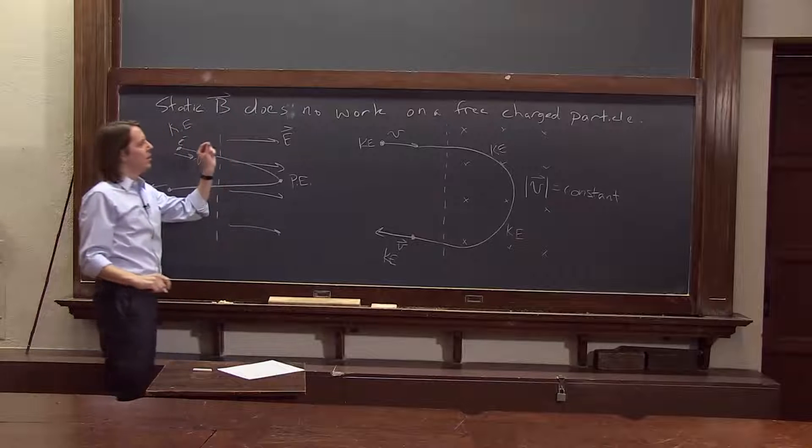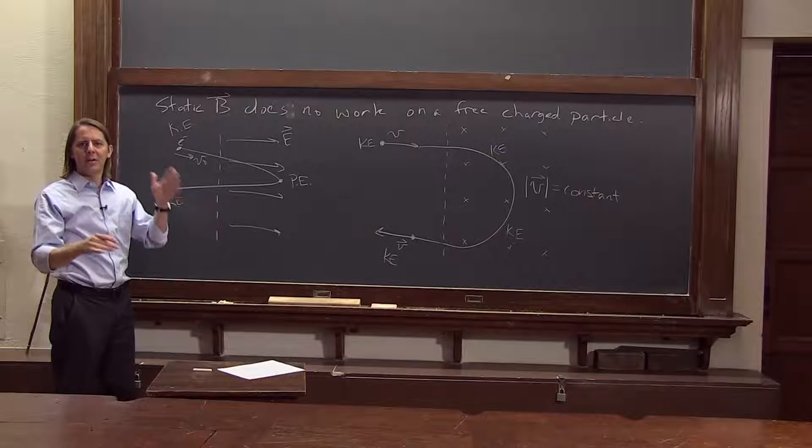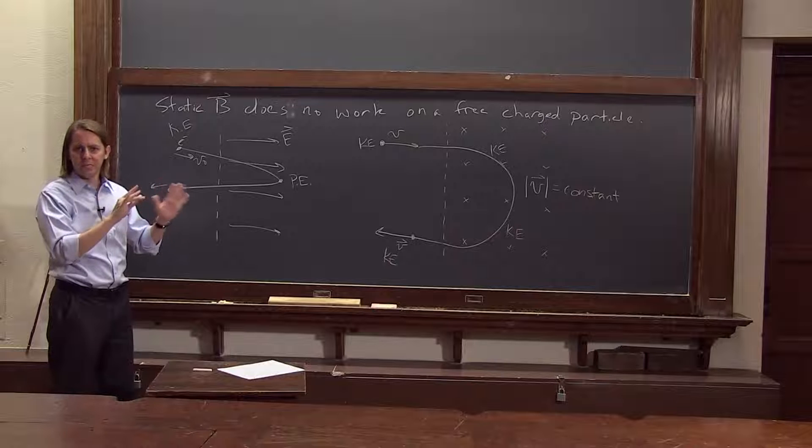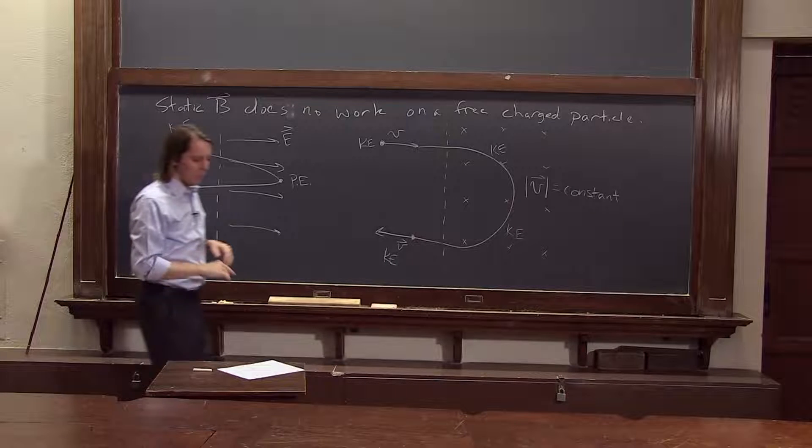A static magnetic field does no work on a free charged particle. If you're just talking about an electron or a proton flying around in empty space, when you put the B field, they just go in circles. That's all that happens. So then, it won't do any work.